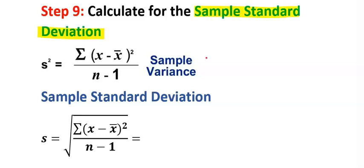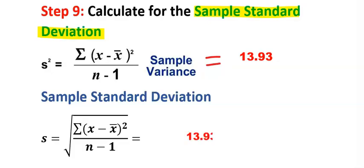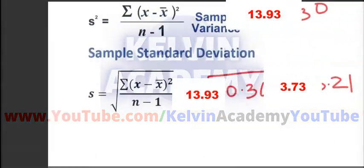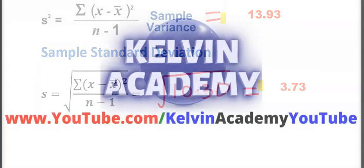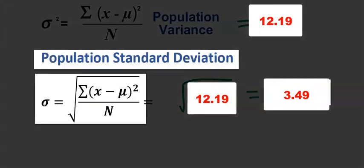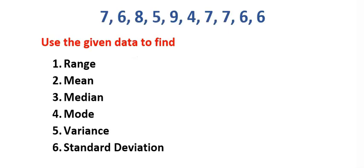In step nine, consider the sample standard deviation. Take the square root of the sample variance obtained in step eight to get the sample standard deviation. In conclusion, our sample variance and sample standard deviation are obtained, and our population variance and population standard deviation are also obtained — giving us four answers in total.